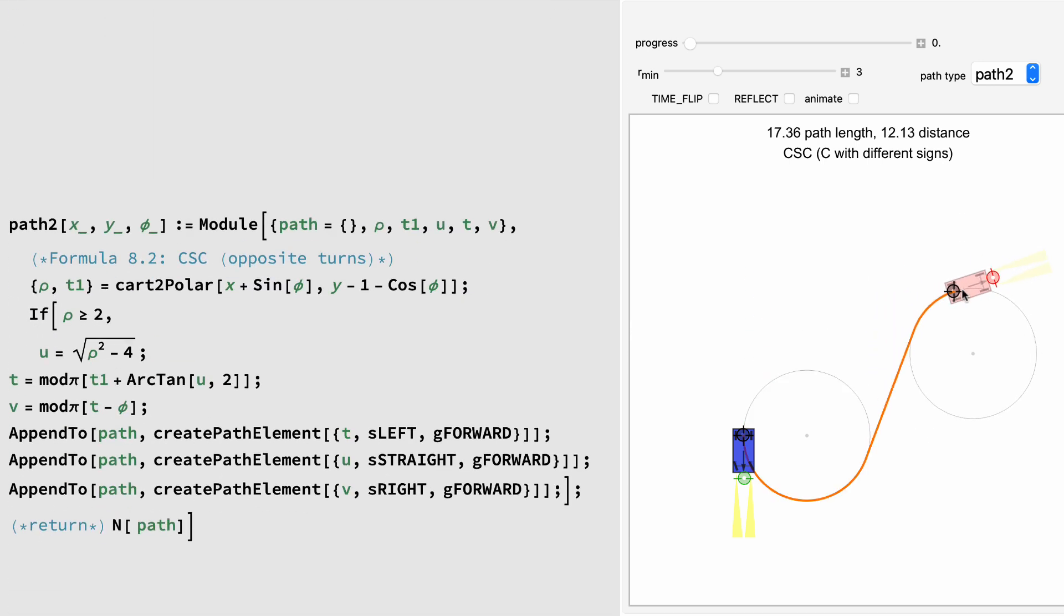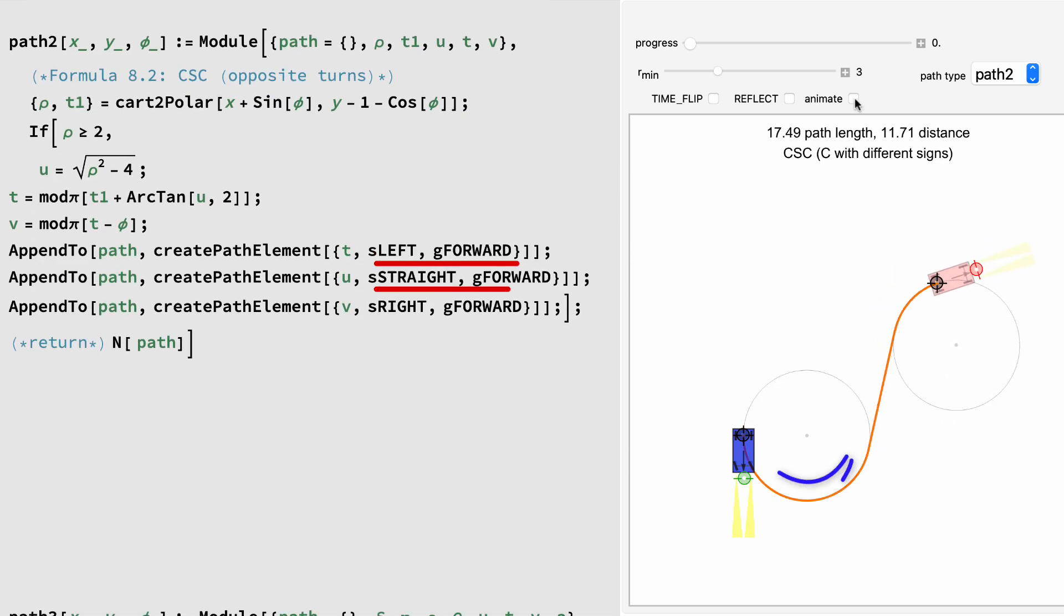Path 2 is a curve-straight-curve, where the C's are in different directions. Again, we convert an offset position from Cartesian coordinates to polar coordinates, and then compute the angles and distances.